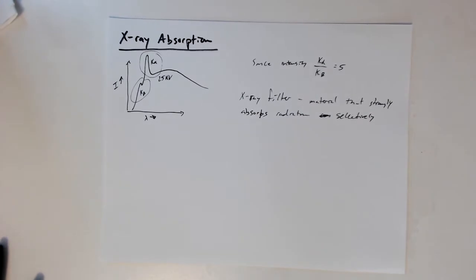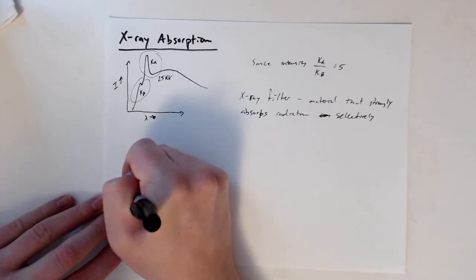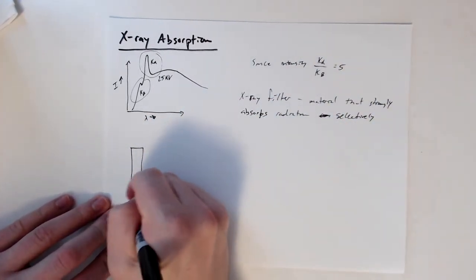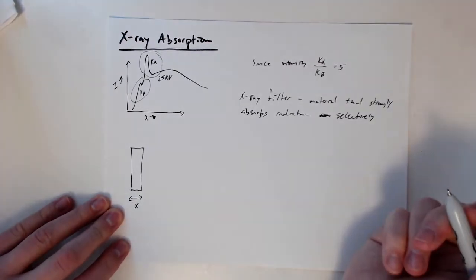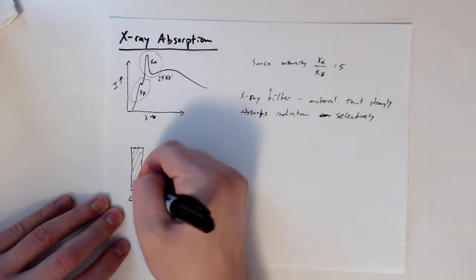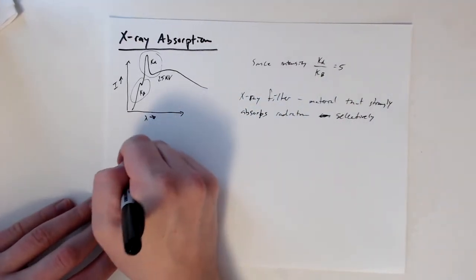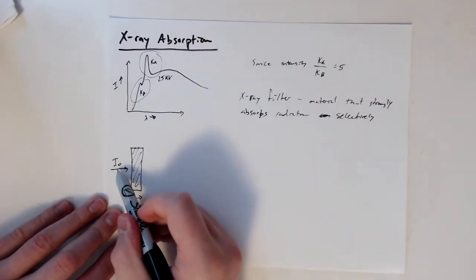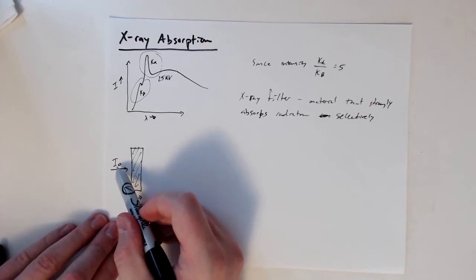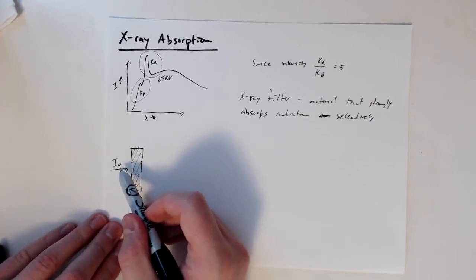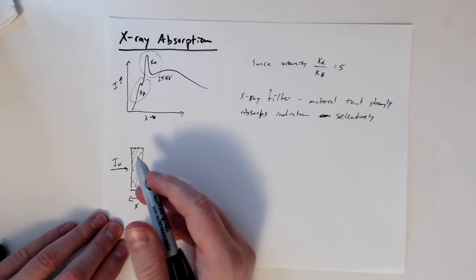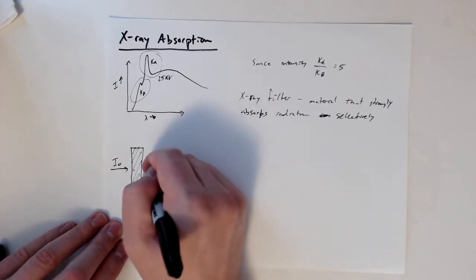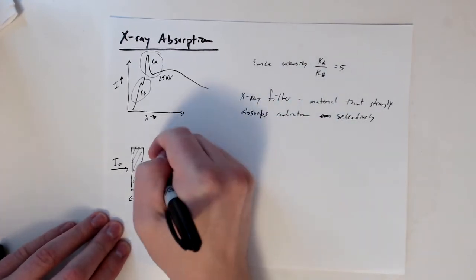We need to look at the general principle of x-ray absorption. Let's say I have a material of thickness x. I have x-ray radiation coming in, our incident beam, so the intensity is I₀, the incident x-ray radiation intensity.